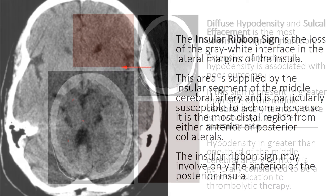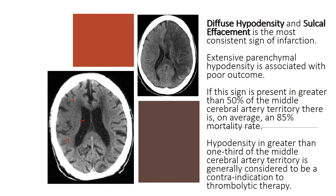Diffuse hypodensity and sulcal effacement is the most consistent sign of infarction. Extensive parenchymal hypodensity is associated with poor outcome. If this sign is present in greater than 50% of the middle cerebral artery territory, there is on average an 85% mortality rate. Hypodensity in greater than one-third of the middle cerebral artery territory is generally considered to be a contraindication to thrombolytic therapy.